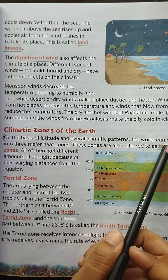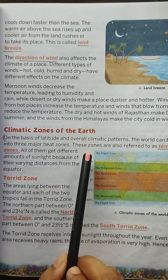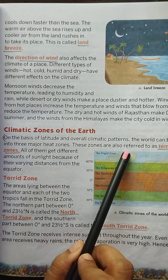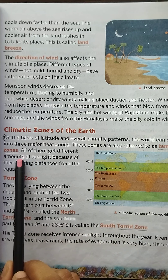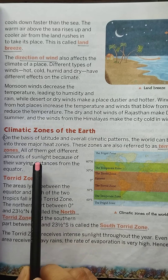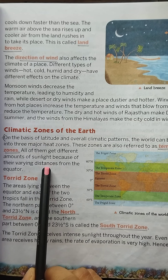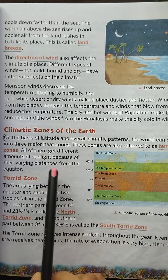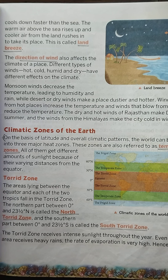On the basis of latitude and overall climatic patterns, the world can be divided into three major heat zones. These zones are also referred to as temperature zones. All of them get different amounts of sunlight because of their varying distances from the equator.